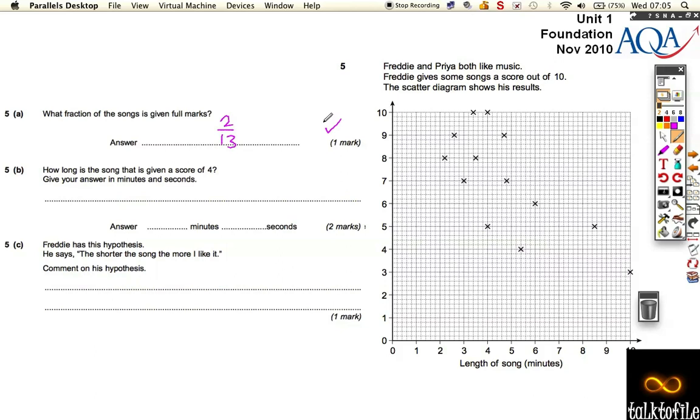How long is the song that is given a score of 4? Well, this one is the one that's given a score of 4. And we've got to work out how long it is. So you've got to look really carefully at this. If you go down, it's 5 minutes plus 2 little squares. Now, this can't be 10 seconds because it can't go 10 seconds, 20 seconds, 30 seconds, 40 seconds, 50 seconds. It doesn't work. So you've got to do the 60 seconds. There's 5 little squares.